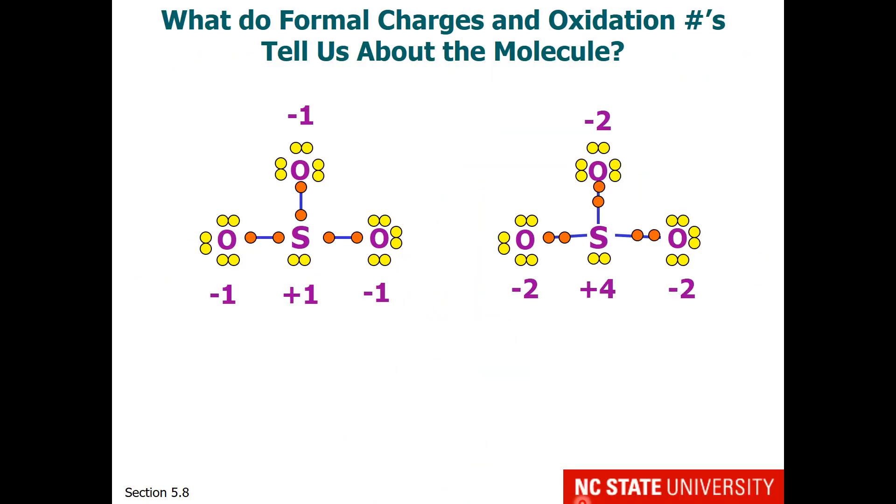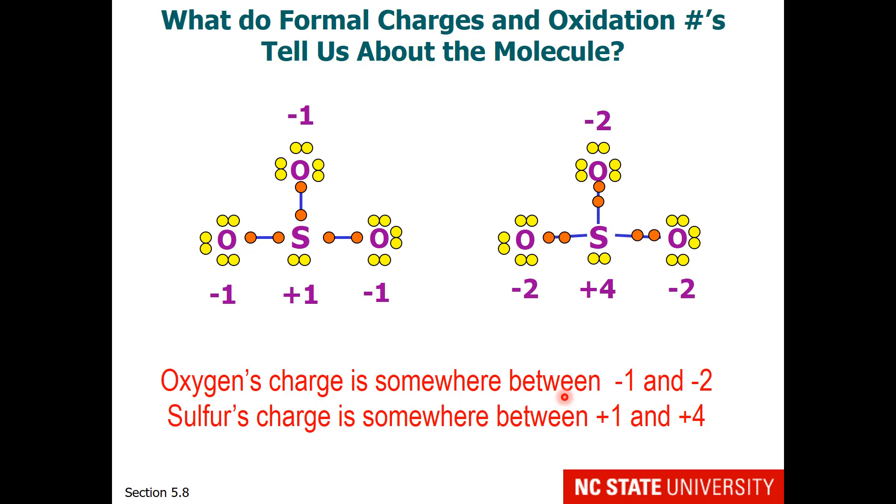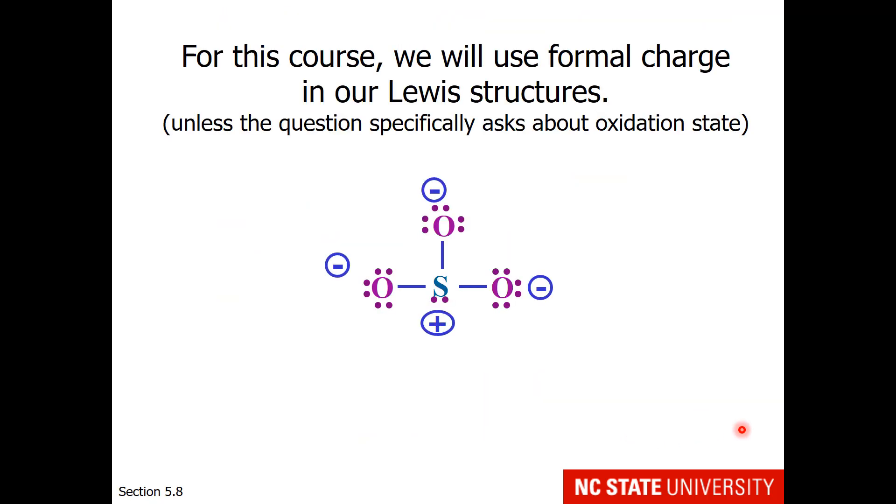So what do formal charges and oxidation numbers tell us about the molecule? Well, in general, they tell us that oxygen is a bit negative in this molecule, regardless of whether you look at formal charge or oxidation number. It also tells us sulfur is likely to be somewhat positive in this molecule, either calculational method. So oxygen's charge in the molecule is somewhere between minus 1 and minus 2, and sulfur's charge is somewhere between plus 1 and plus 4. For your homework and for most other organic compounds that you'll encounter in the future, formal charges are used. So unless you encounter a question that specifically asks about oxidation state, please answer with formal charge.